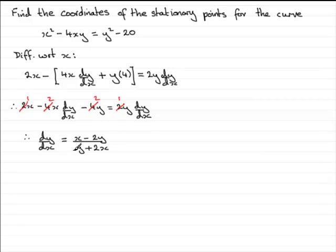Now, it's at this point that we need to find the stationary points. So, at stationary points, let's just write this in here, helps the reader see what we're doing. At stationary points, dy by dx equals 0. So, what we need to say then is that, therefore, x minus 2y over y plus 2x has to equal 0.